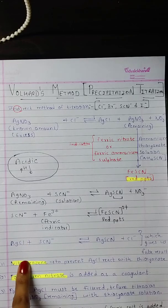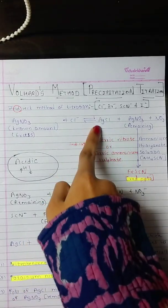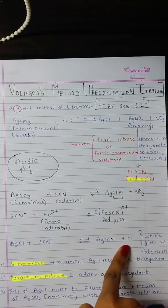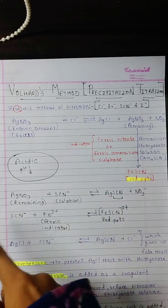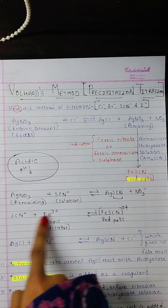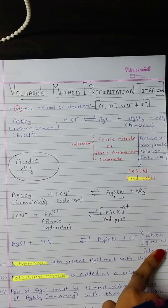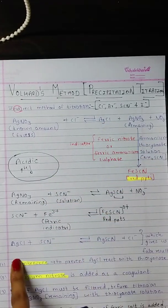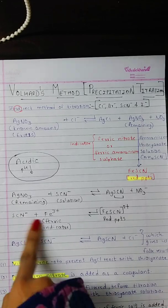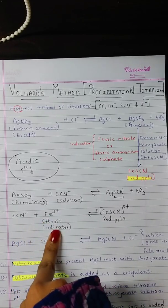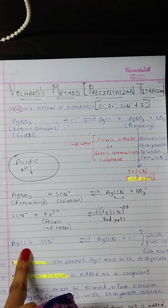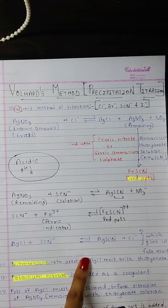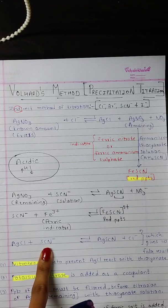One issue to take care of: sometimes AgCl will react with the ammonium thiocyanate solution, giving a false reaction — AgSCN is formed, and then the ferric indicator reacts with it to give red precipitates, which would be false results. To prevent AgCl from reacting with ammonium thiocyanate, three things can be done. First, we can mask the AgCl using nitrobenzene, which acts as a masking agent to prevent AgCl from reacting with the thiocyanate solution.